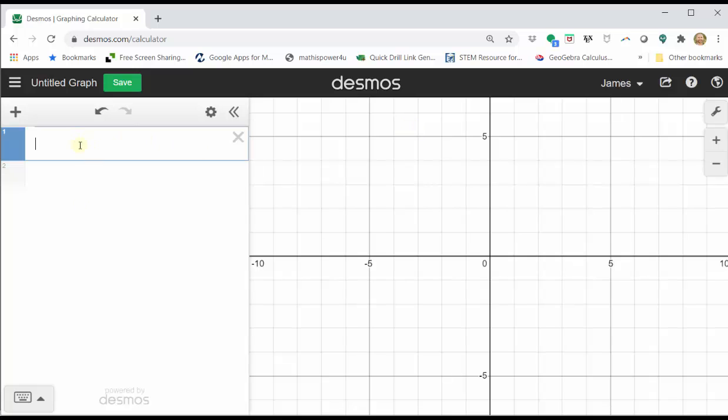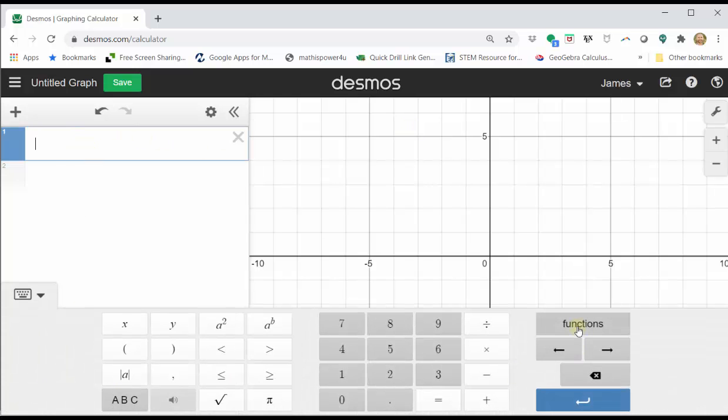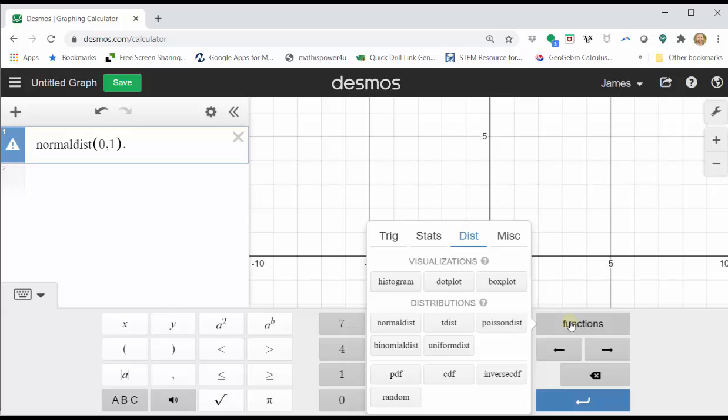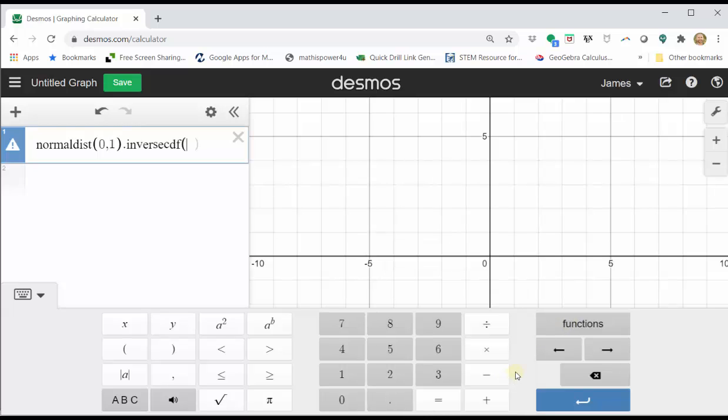With the cursor in cell one, click Show Keypad, click Functions, click Normal Dist for Normal Distribution, enter a mean of zero comma standard deviation of one, close parenthesis, either decimal point or period, click Functions, click Inverse CDF, enter the area to the left, which is 0.975, and the Z-score shows below, which is approximately 1.96 for the 95% confidence interval.